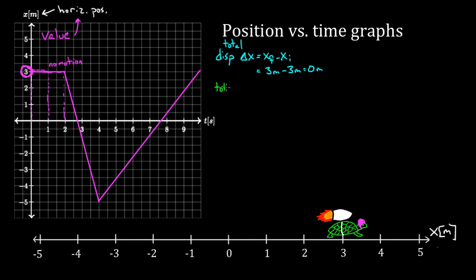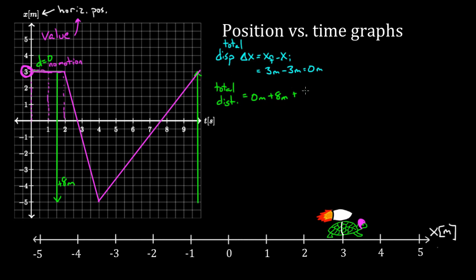We can also figure out the total distance traveled — the sum of all path lengths. For the first two seconds, there was zero distance traveled. Between two and four seconds, the turtle went from three to negative five meters: that's a distance of eight meters. Distance is always positive, so we keep that as eight. Between four and ten seconds, the turtle went from negative five all the way back to three meters — another eight meters. So the total distance traveled was 16 meters for the whole trip.